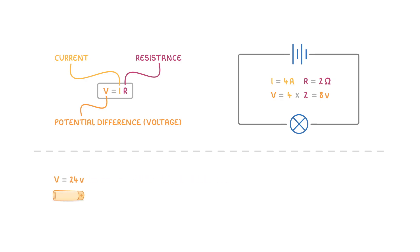Or for another example, if we had a 24 volt battery, which was producing a current of 8 amps, then to find the resistance, we'd have to rearrange our equation to R equals V over I, and then do 24 divided by 8, to give 3 ohms.